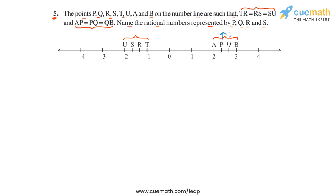So P and Q are these two points, and then R and S are these two points here. So we have to determine the rational numbers represented by these four points, P, Q, R, and S.